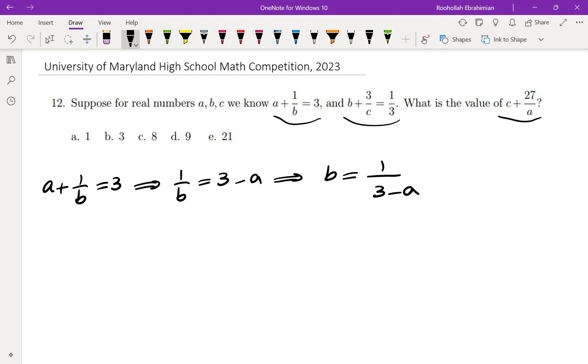We are going to take this and put it into the second equation. That gives us 1 over 3 minus a plus 3 over c equals 1 third.